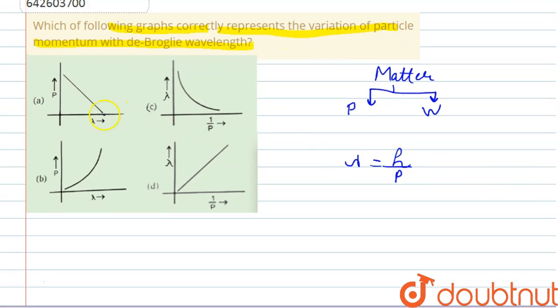Now we have to plot the graph between p and lambda. Since h is Planck's constant, from here we can conclude that lambda is inversely proportional to the momentum. So this is the relation between the wavelength and the momentum.